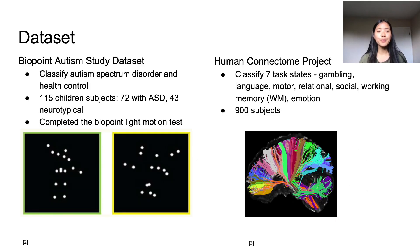This study used two completely different datasets to build the neural network. The first one was the BioPoint Autism Study dataset that collected fMRI images from 115 subjects, 72 with autism spectrum disorder and 43 neurotypical subjects as the control group. In this study, the subjects completed the BioPoint light motion test as seen on the left. In this cognitive assessment, individuals had to identify if the light animations were biological motion or if they were just a random sequence of lights.